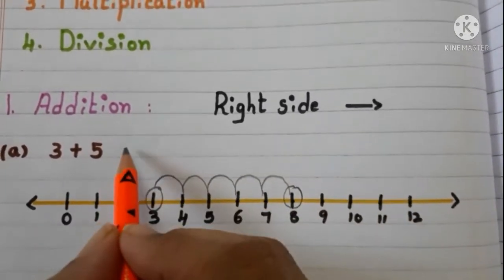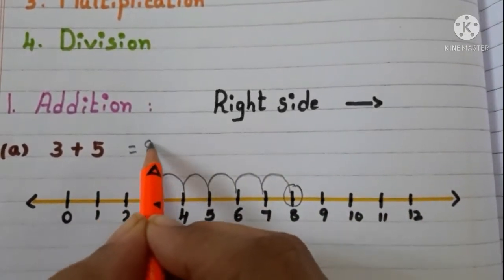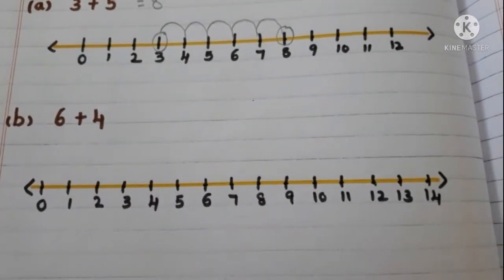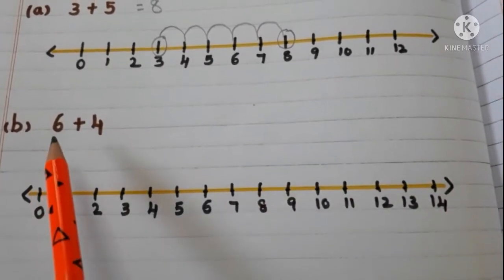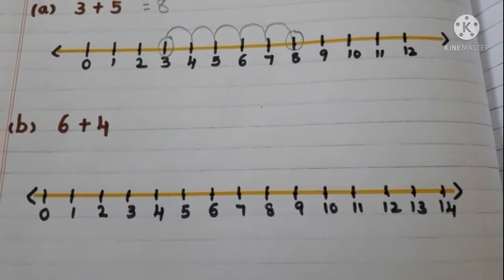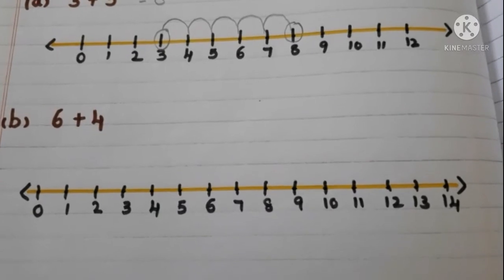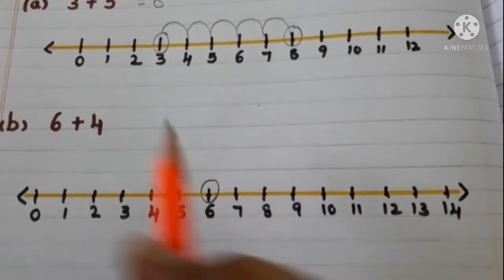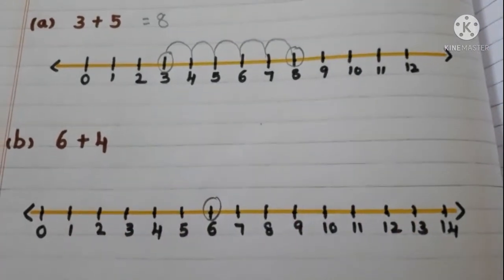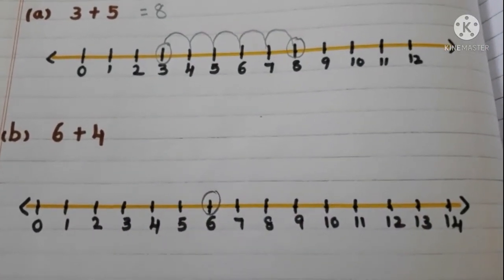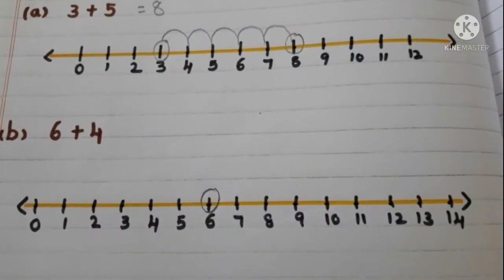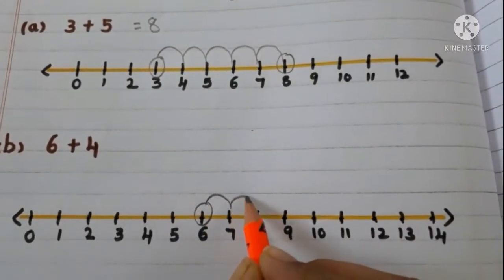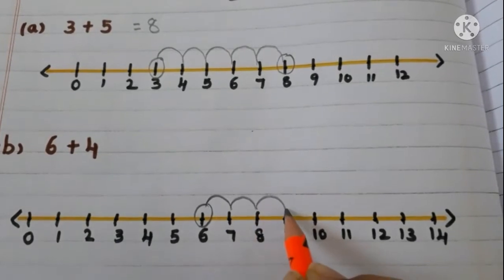Now let us add 6 and 4 by using a number line. What is the first number? 6. So we have to start at 6 on the number line. What is the second number? 4. So we have to move four steps to the right side on the number line: 1, 2, 3, 4. So the answer is 10.